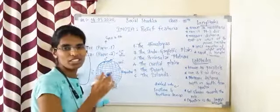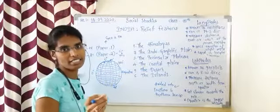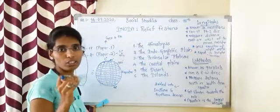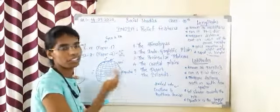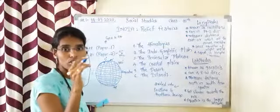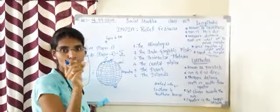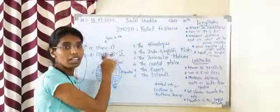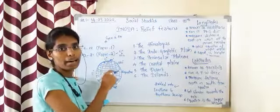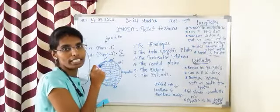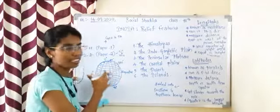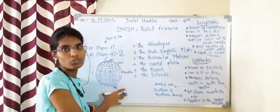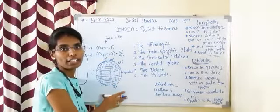Why do we use latitudes and longitudes? These are just imaginary lines. We use these lines to know the exact location of a place. Just like in mathematics we use coordinate points like (1,2) or (2,2) to mark a point, here also based on latitude and longitude we can locate a place very easily. So latitudes and longitudes are imaginary lines which help us find out the location of any place.